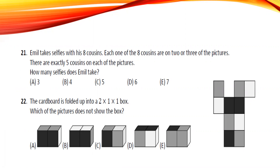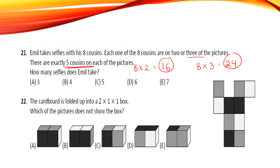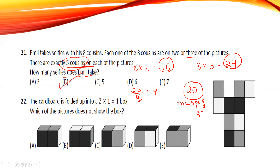Emily takes selfies with her eight cousins. Each of the eight cousins appears in two or three pictures, and exactly five cousins appear in each picture. If each cousin appears twice: 8×2=16. If three times: 8×3=24. The total appearances must be divisible by 5. The value between 16 and 24 divisible by 5 is 20. So total pictures = 20 ÷ 5 = 4.